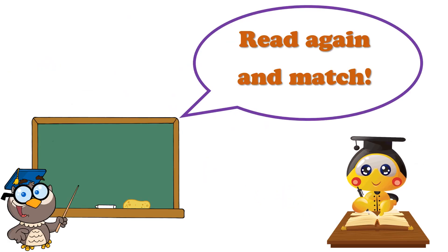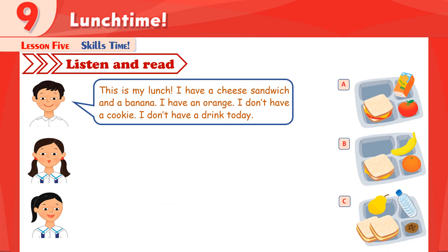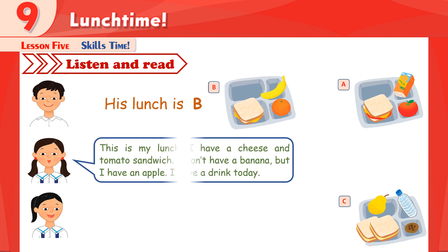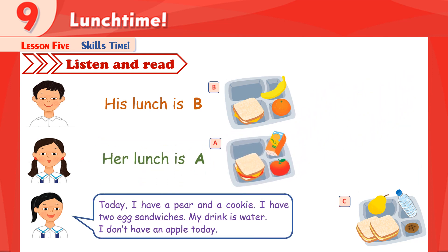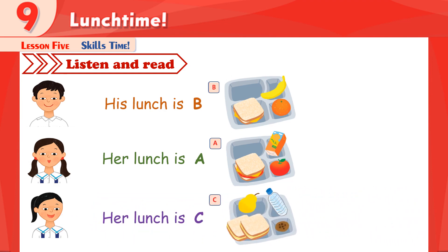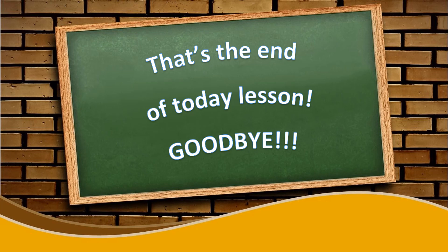The last activity — let's read again and match. The first student has a sandwich, a banana, and an orange. So his lunch is B. The next one — she has a sandwich, an apple, and a drink. So her lunch is A. The last student has a pear, a cookie, two sandwiches, and water. So her lunch is C. You studied hard today. That's the end of the lesson. Goodbye!